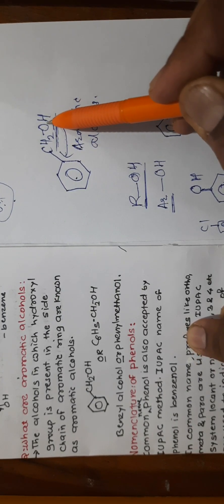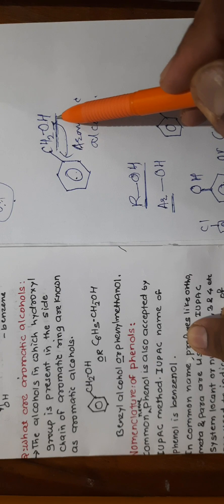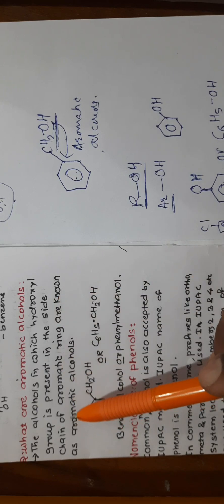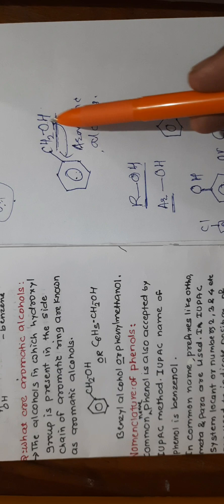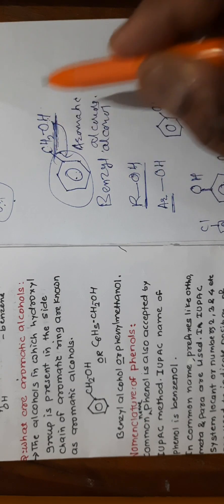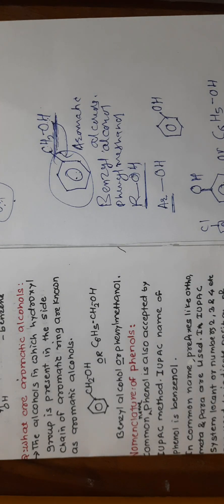Aromatic alcohols are compounds in which the hydroxyl group is present in the side chain of the aromatic ring structure. The example C6H5-CH2-OH is known as benzene alcohol or phenyl methanol — this is an aromatic alcohol.